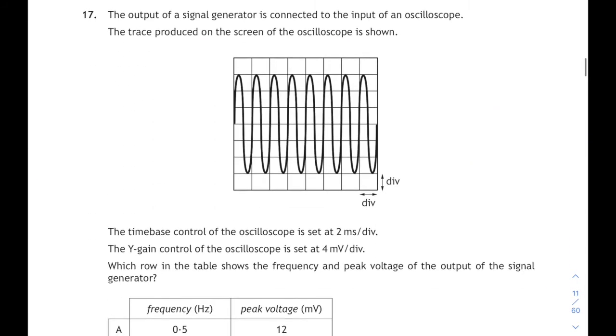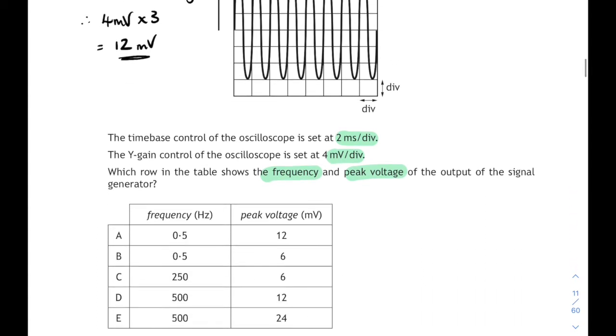Question 17. We've got an AC signal on our oscilloscope. The time-based control is set at 2 milliseconds per division. The Y gain is 4 millivolts per division. We have to figure out which row in the table shows the frequency and the peak voltage of the output of the signal generator. It's easiest to do the peak voltage first. That's the height of the wave measured from the middle to the peak, which in this case is 3 boxes or 3 divisions. Each division we are told is 4 millivolts. So 4 millivolts times 3 divisions is 12 millivolts. That's the peak voltage. So it can only be A or D.